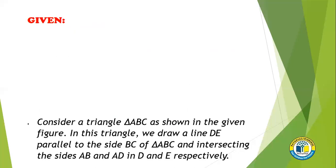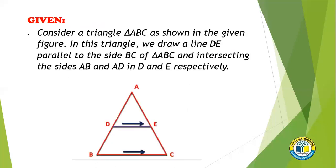Now we have been given triangle ABC. Here we will draw a line DE which is parallel to BC of triangle ABC, and it intersects the sides AB and AC at points D and E respectively.